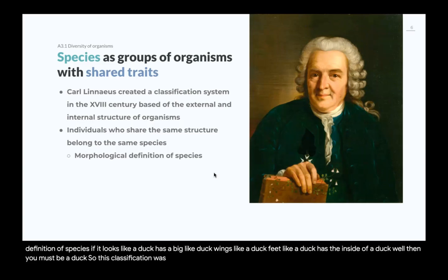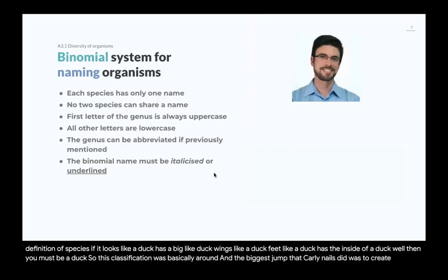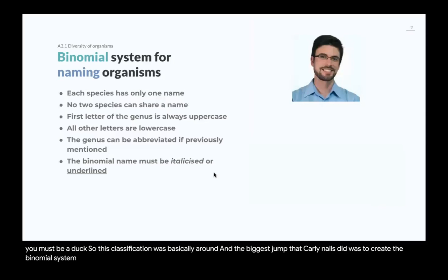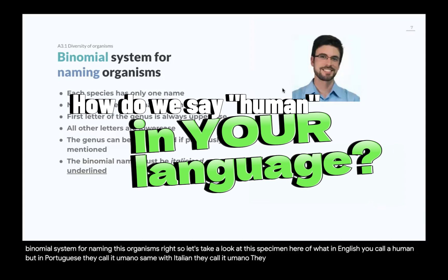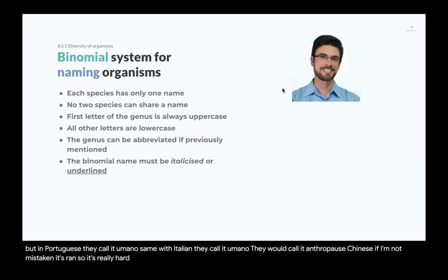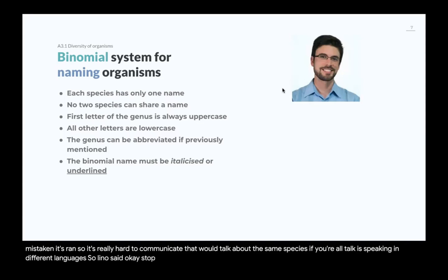The biggest jump that Linnaeus made was creating the binomial system for naming organisms. Take this specimen — what in English you call a human, in Portuguese humano, in Italian humano, in Greek anthropos, in Chinese ren. It's really hard to communicate that we're talking about the same species if we're all speaking different languages. So Linnaeus said each species has only one scientific name, and no two species can share the same name.